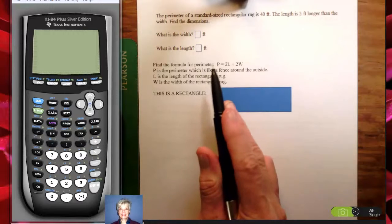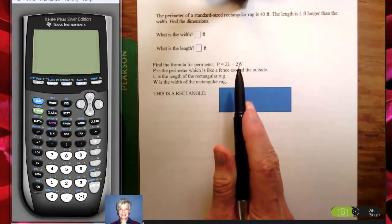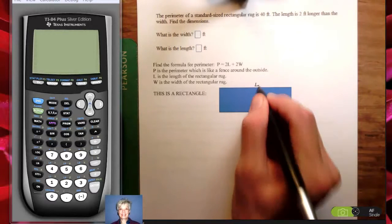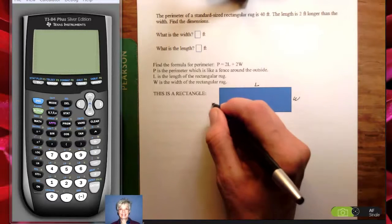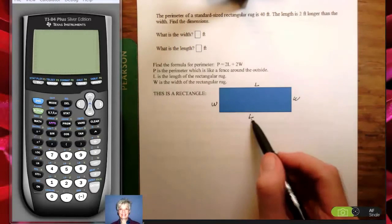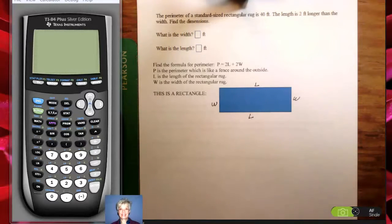Second, you need to know what the formula for perimeter is. You're going to be using it a lot. P equals 2L plus 2W. The reason for that is that this formula has 2Ls and 2Ws. If you add the 2Ls together and you add the 2Ws together, you get the perimeter. Perimeter is like a fence around the outside.